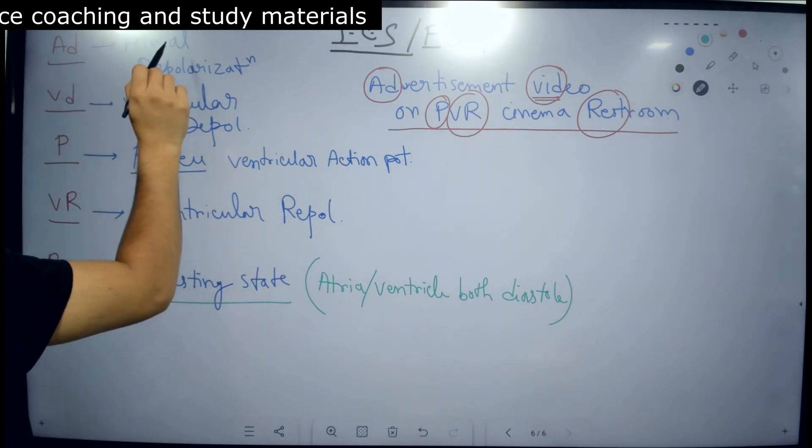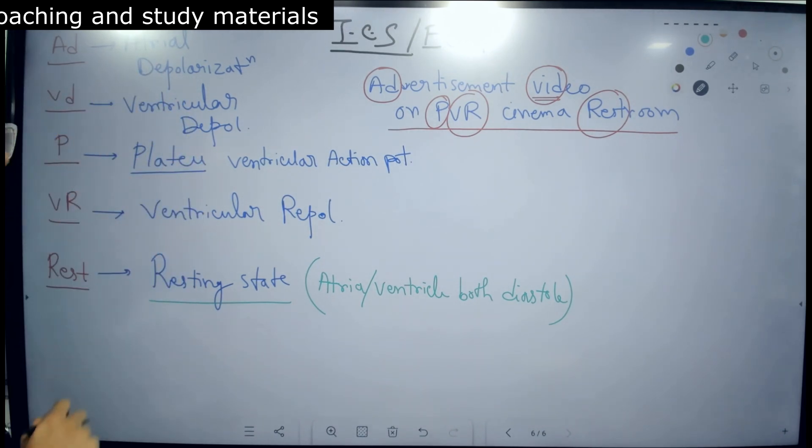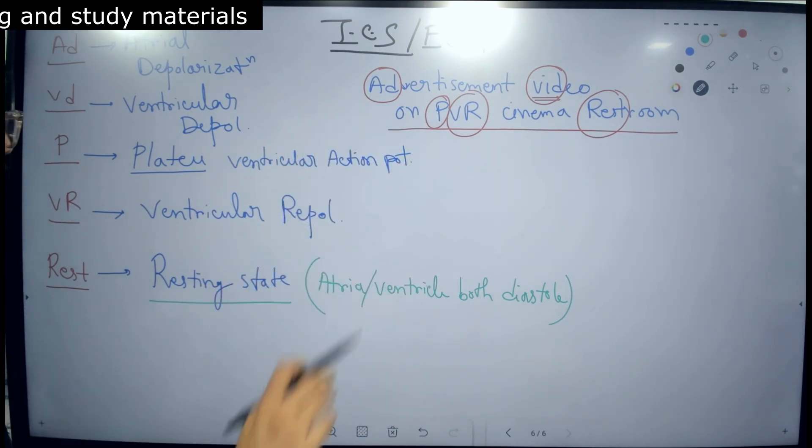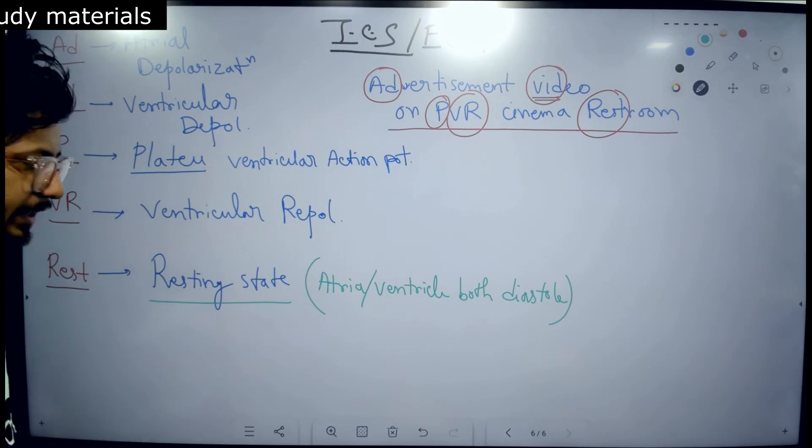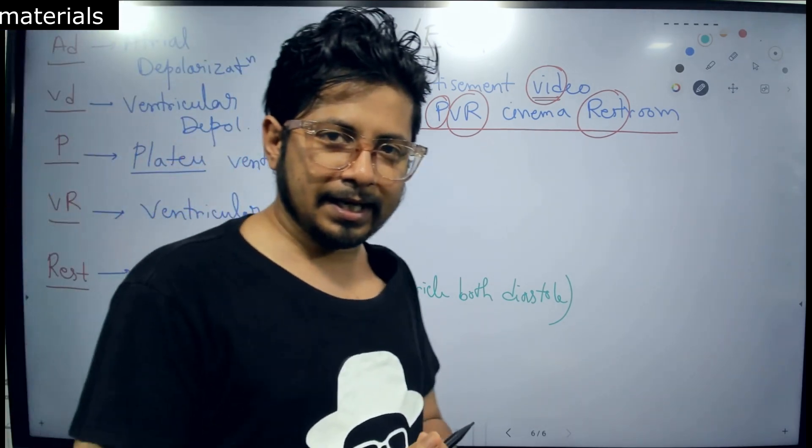AD, atrial depolarization. VD, ventricle depolarization. P for plateau of ventricular action potential. VR for ventricular repolarization. Rest is a resting state.